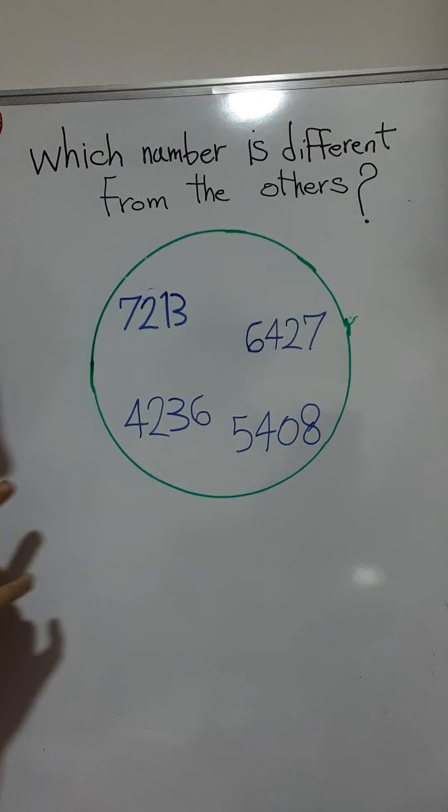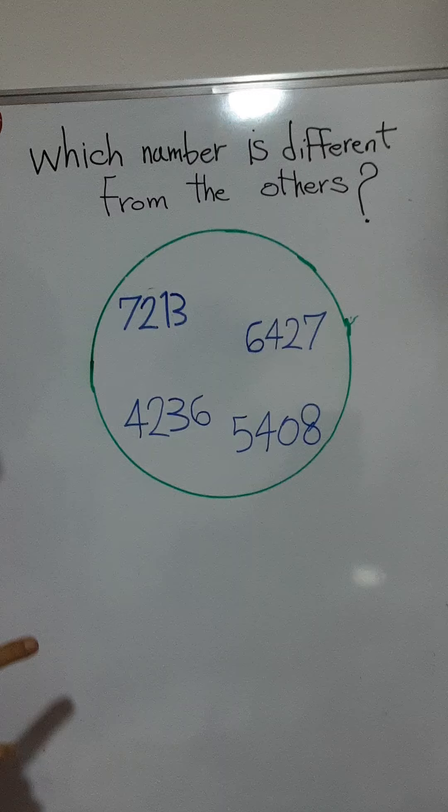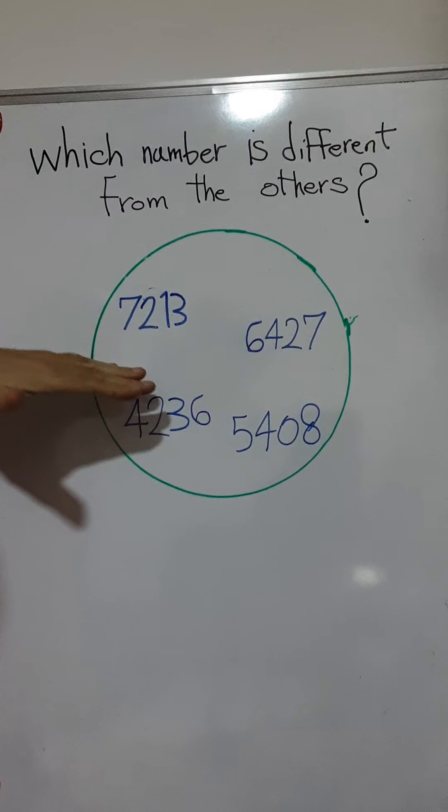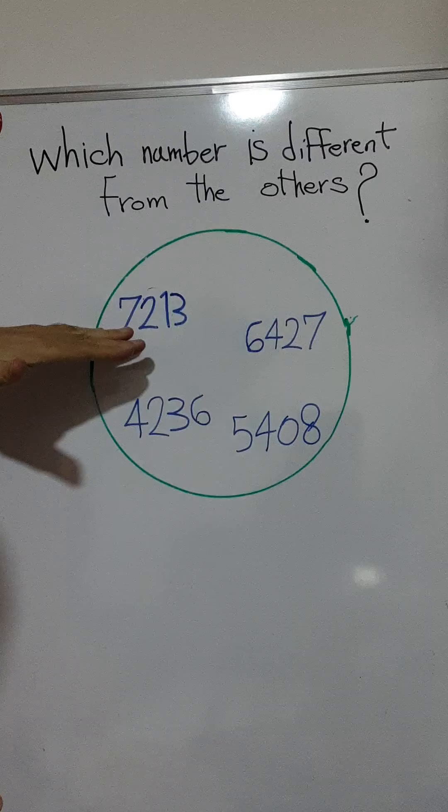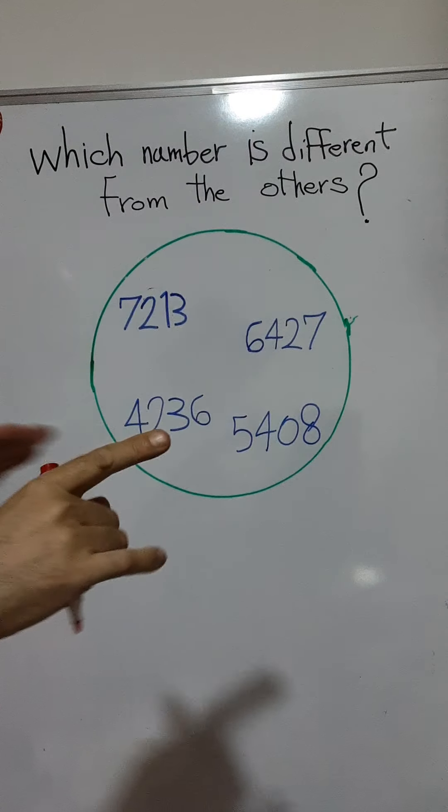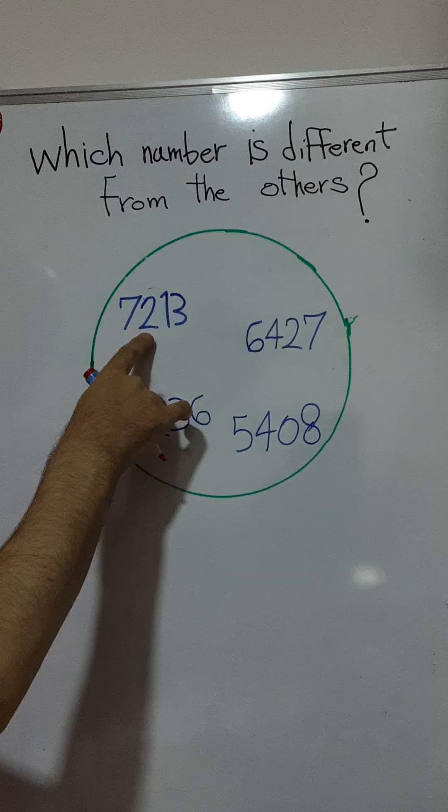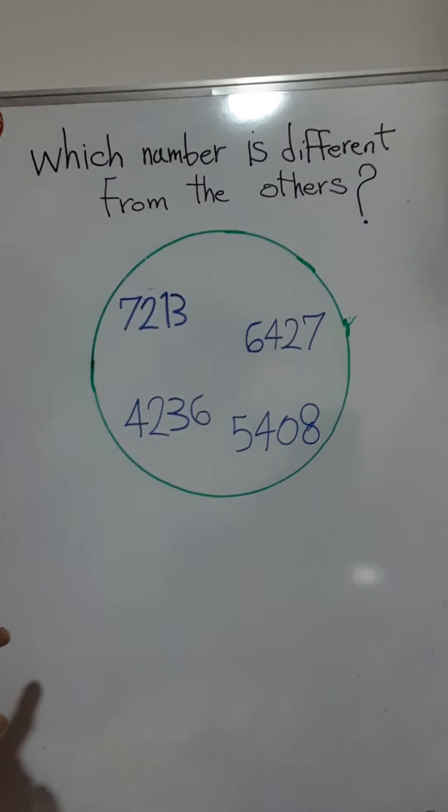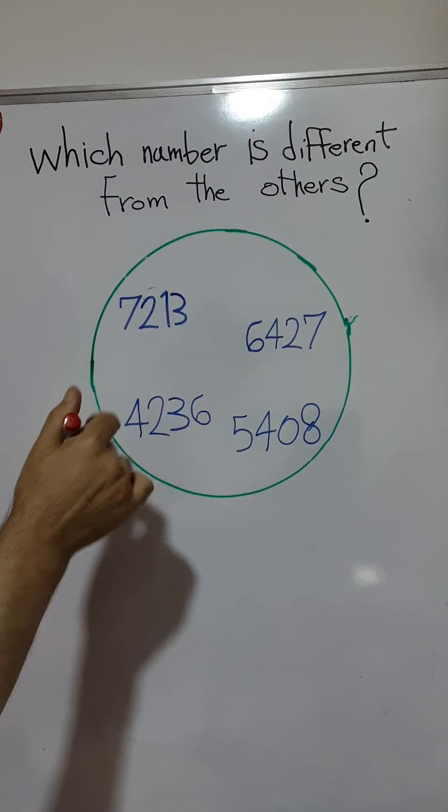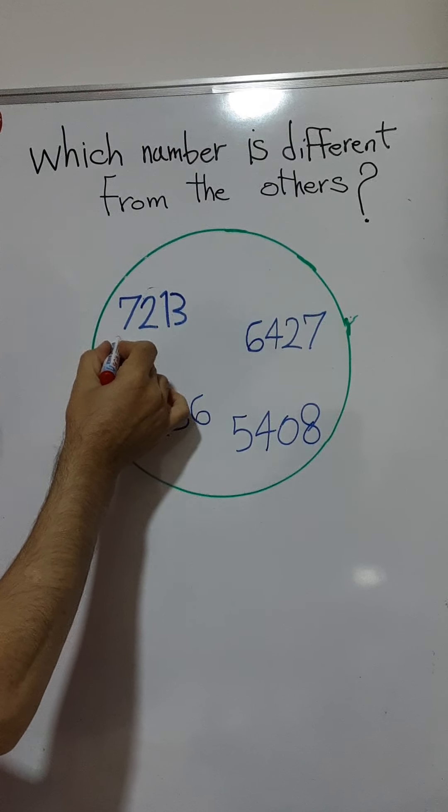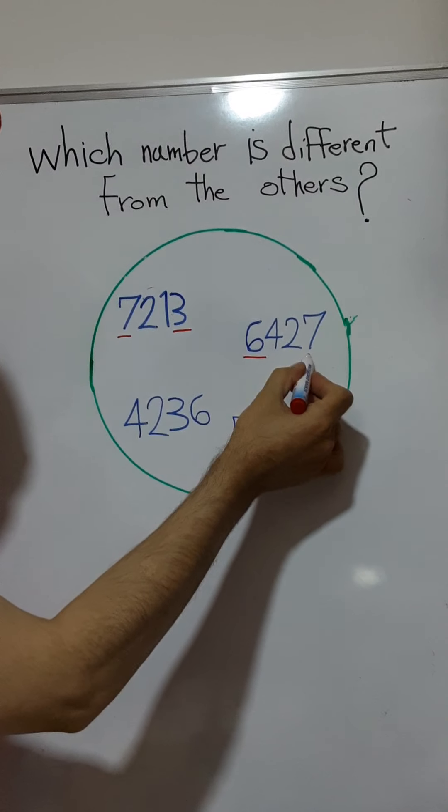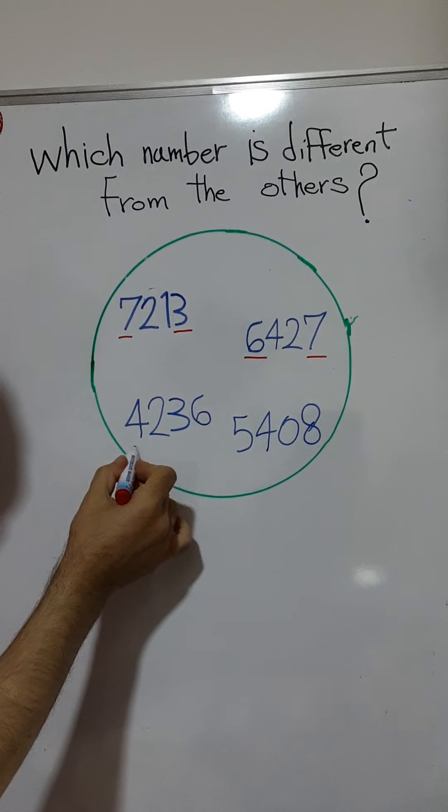Please don't read it, for example 7213 you must read it seven two one three. Please focus on the value placement. You have here seven and three, six and seven, four and six, five and eight.